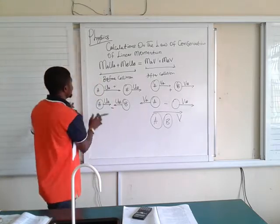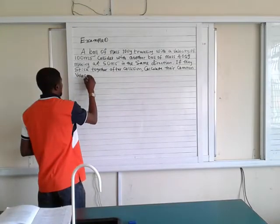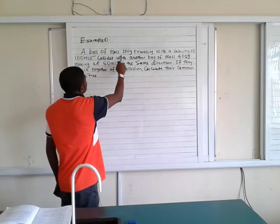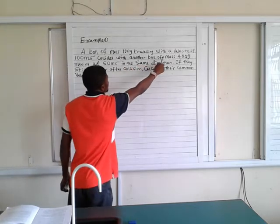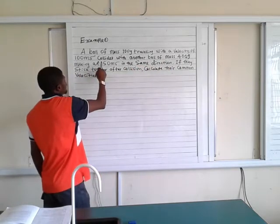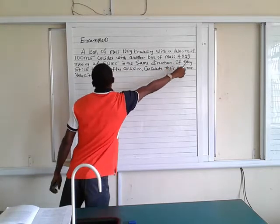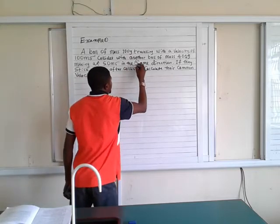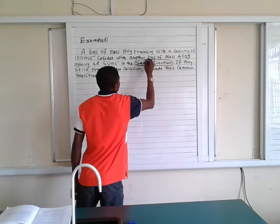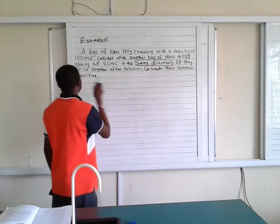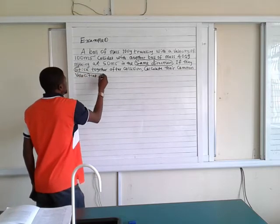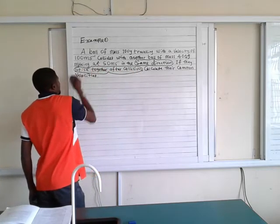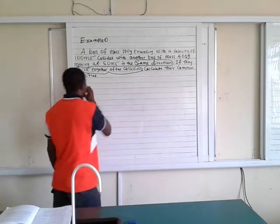Let's look at example number 1. A ball of mass 100 grams travelling with a velocity of 100 metres per second collides with another ball of mass 400 grams moving at 50 metres per second in the same direction. If they stick together after collision, calculate their common velocity.